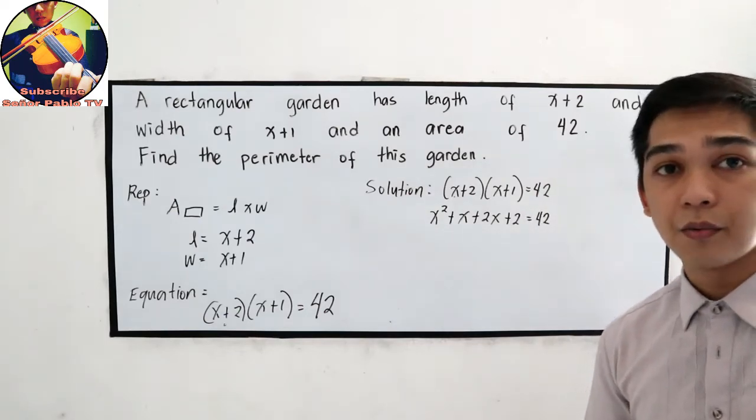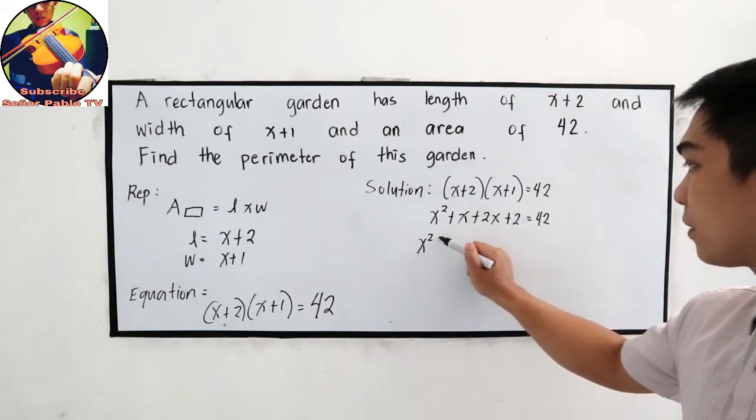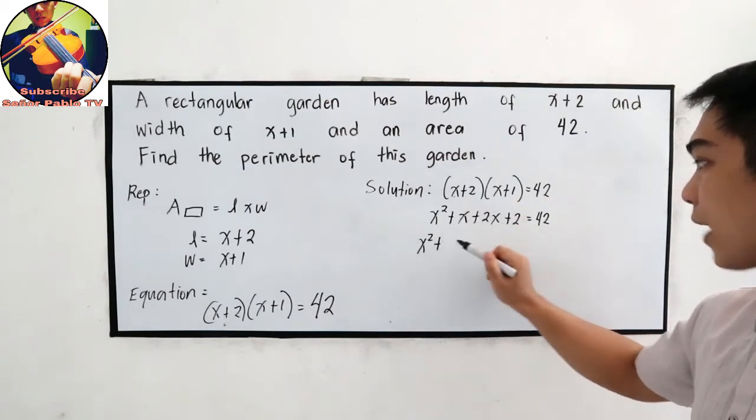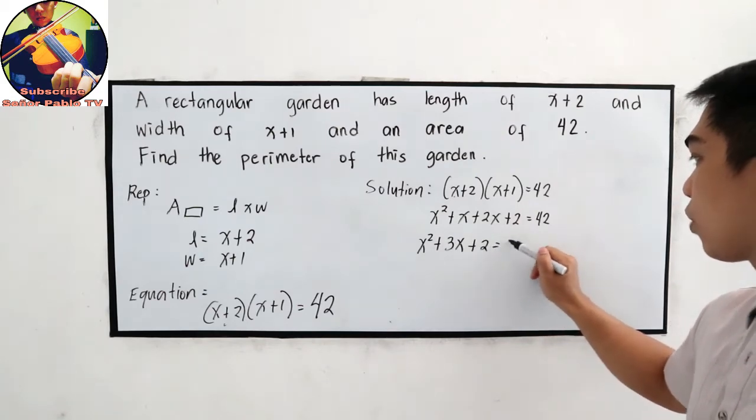Combine like terms. So we have x squared plus x plus 2x, that is 3x, plus 2 is equal to 42.